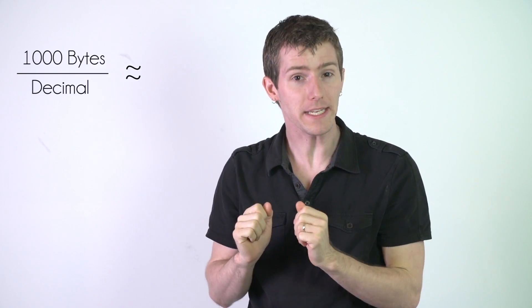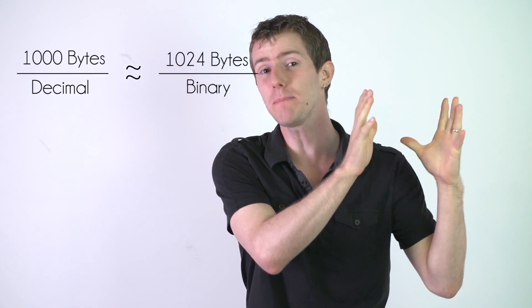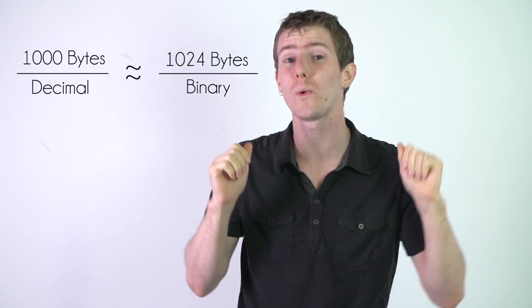Now back when data sizes were much smaller, an approximate equivalency was drawn between a decimal kilobyte, that is a thousand bytes, and a binary kibibyte, which is 1024 bytes. Sure, why not? It's all good. Well, in their defense, the difference was only a couple percent, so it didn't matter.